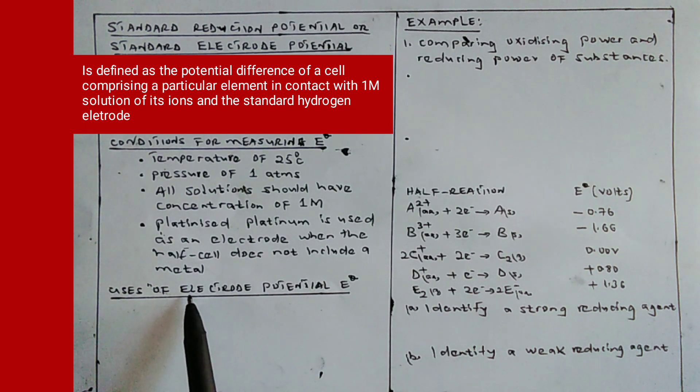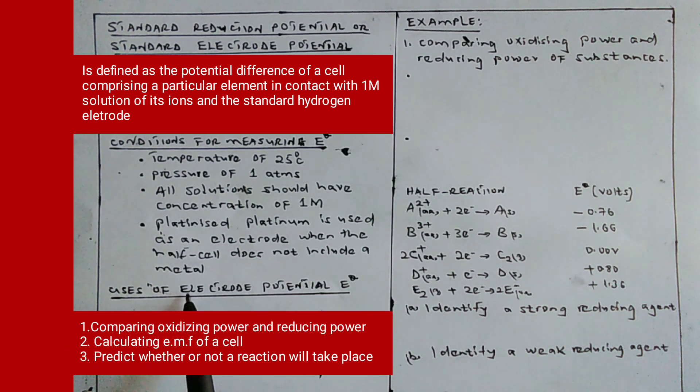The uses of electrode potential: one, comparing the oxidizing power and reducing power of substances. Two, calculating the EMF of a cell. Three, predicting whether or not a reaction takes place.